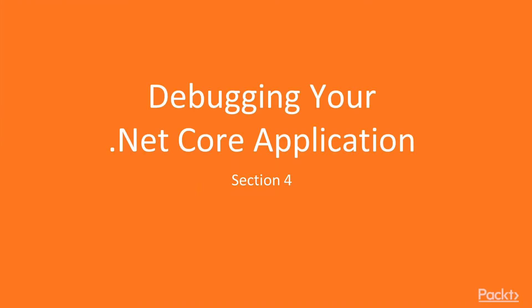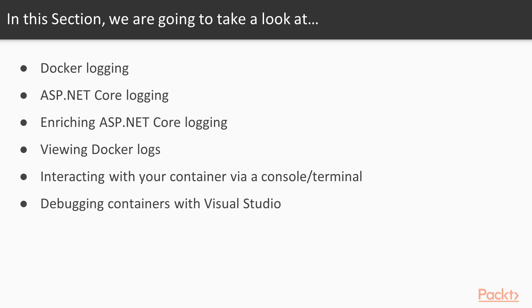Section 4: Debugging your .NET Core application. In this section, we will be exploring how to debug your ASP.NET Core Docker containers, looking at the main way this is done with Docker logging. We will see how simple it is to log with ASP.NET Core, enhancing these logs, viewing container logs, and viewing these same logs with cloud providers.